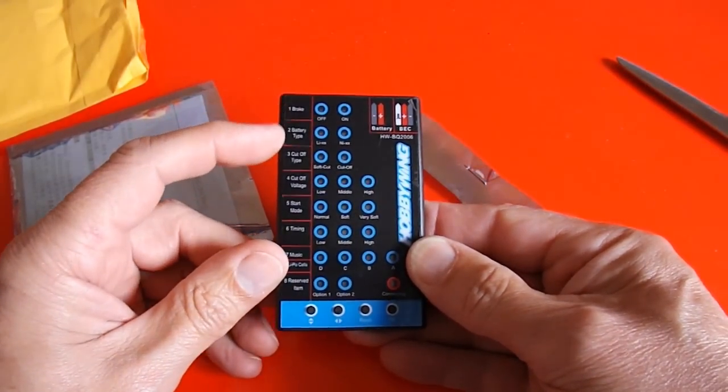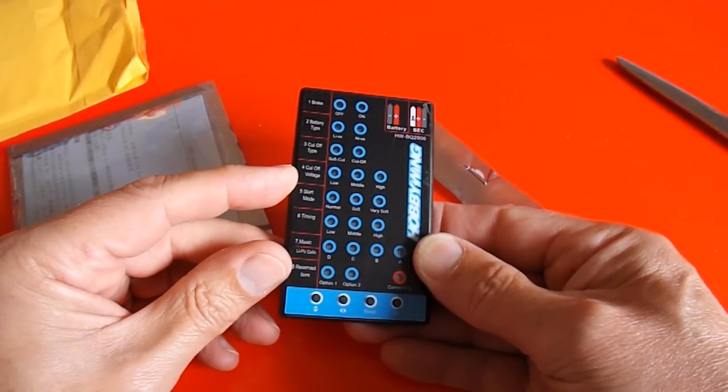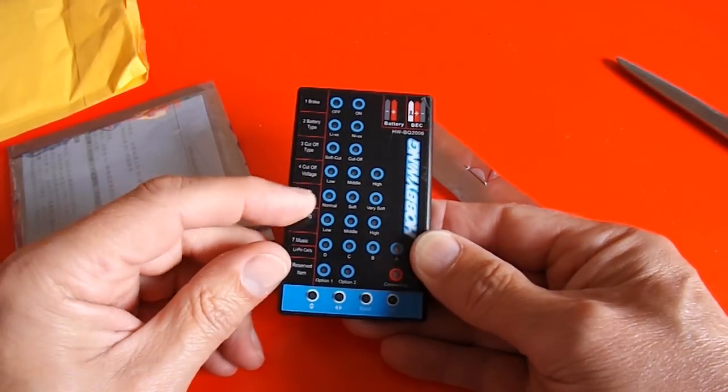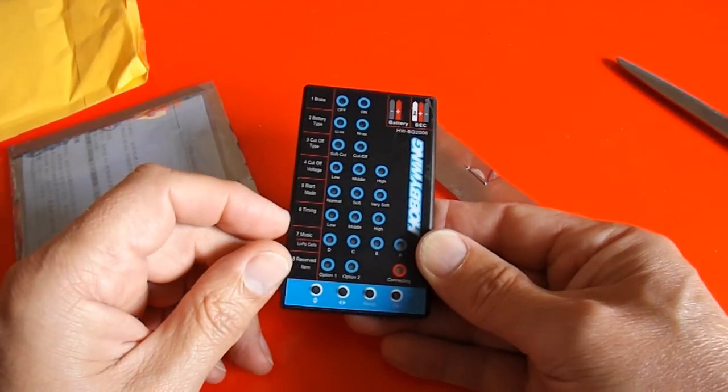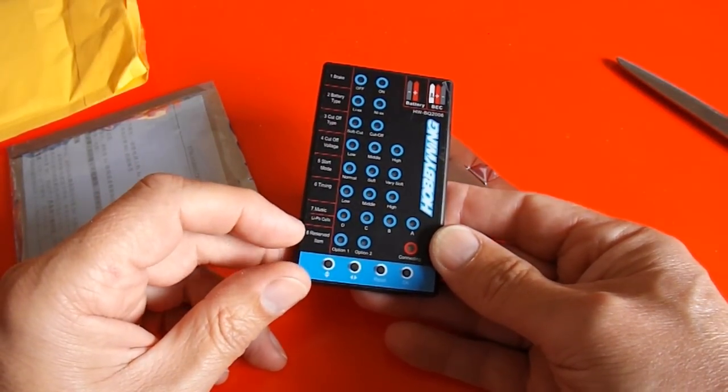Brake on and off. Battery type. Cut off. Cut off voltage. Start mode. Normal, soft, very soft. Timing. Music. And reserved items.